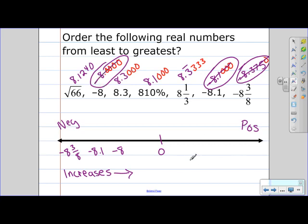Now we are on the positive side of the number line. And so now we're going to be counting up. Before we were counting down, now we're counting up. So we're going to start with the smallest. So we have, let's see, 1000. So that was 810%. And then 1240. So the square root of 66.